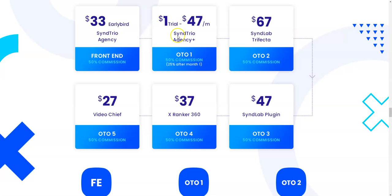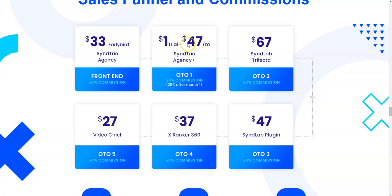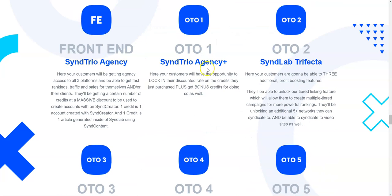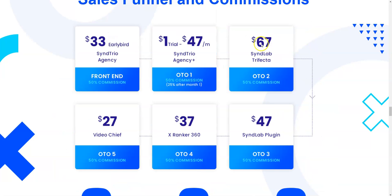OTO number one is SyndTrio Agency Plus, which is a $1 trial and then $47 per month. Here you will have the opportunity to lock in your discounted rate on the credits you purchased plus get bonus credits for doing so. OTO number two is SyndLab Trifecta at $67. Here you'll be able to unlock the tiered linking feature — allowing you to create multiple-tiered campaigns for more powerful rankings — plus an additional five-plus networks to syndicate to, and the ability to syndicate to video sites as well.